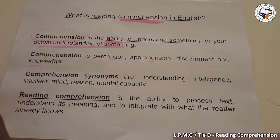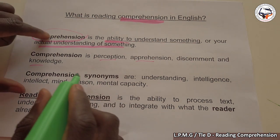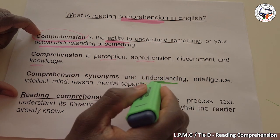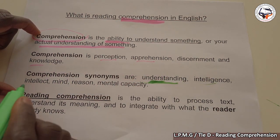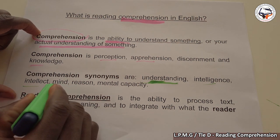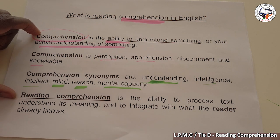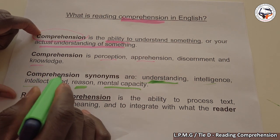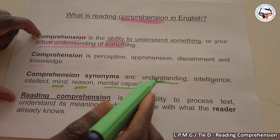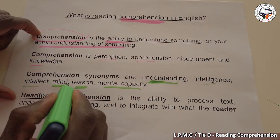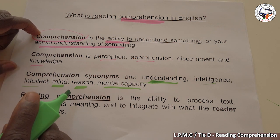I'm going to give you some synonyms of comprehension. Comprehension synonyms include: understanding, intelligence, intellect, the mind, the reason, and mental capacity. Mental capacity is what it means to comprehend something.